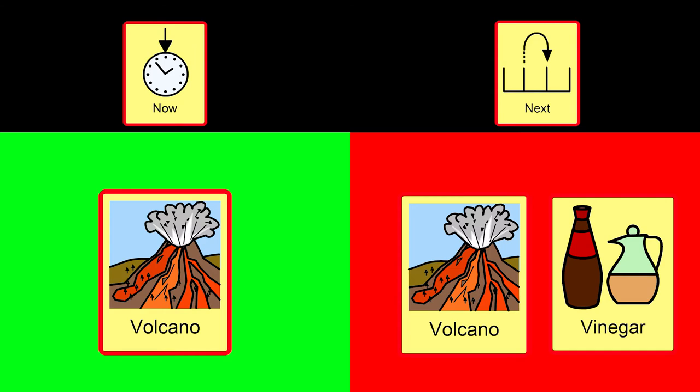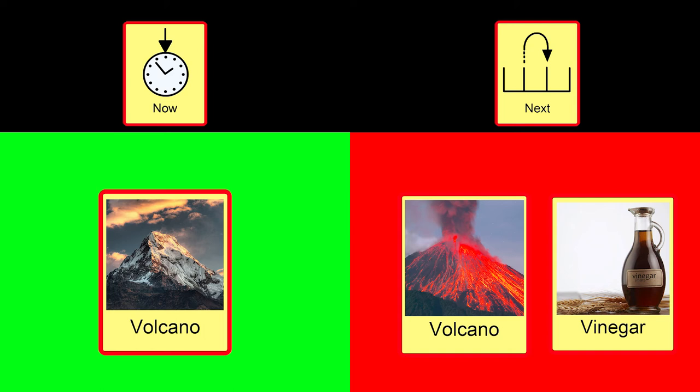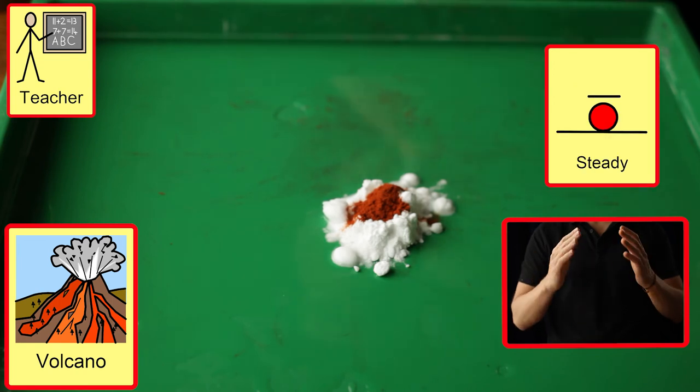We can then change our now and next board to look as follows, using ready, steady, go, waiting for the student to copy at each stage and then pouring the vinegar or lemon onto our volcano. Ready, steady, go.